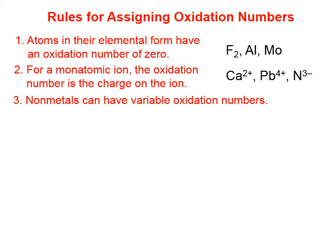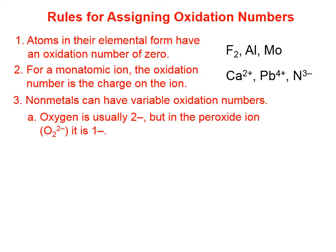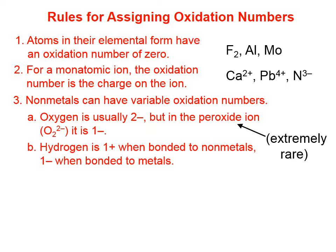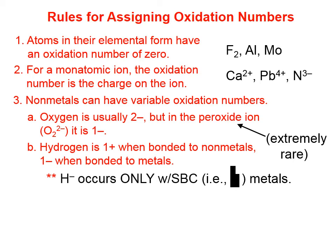Rule 3: non-metals can have variable oxidation numbers. Oxygen is usually 2−, but in the peroxide ion it's 1−. We don't encounter the peroxide ion very often, so as a general rule of thumb, you can pretty much count on the oxidation number of every oxygen being 2−. Hydrogen is 1+ when bonded to non-metals, and 1− when bonded to metals.